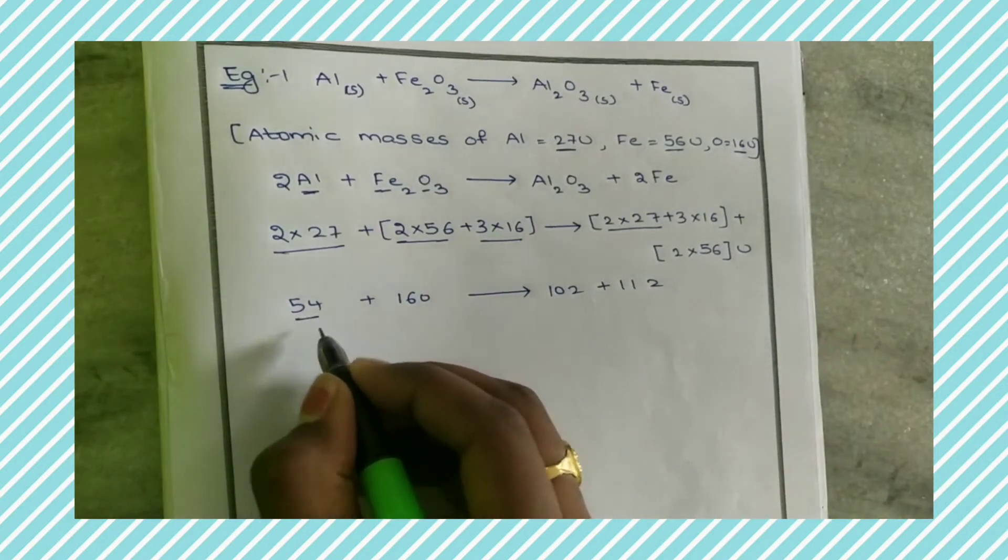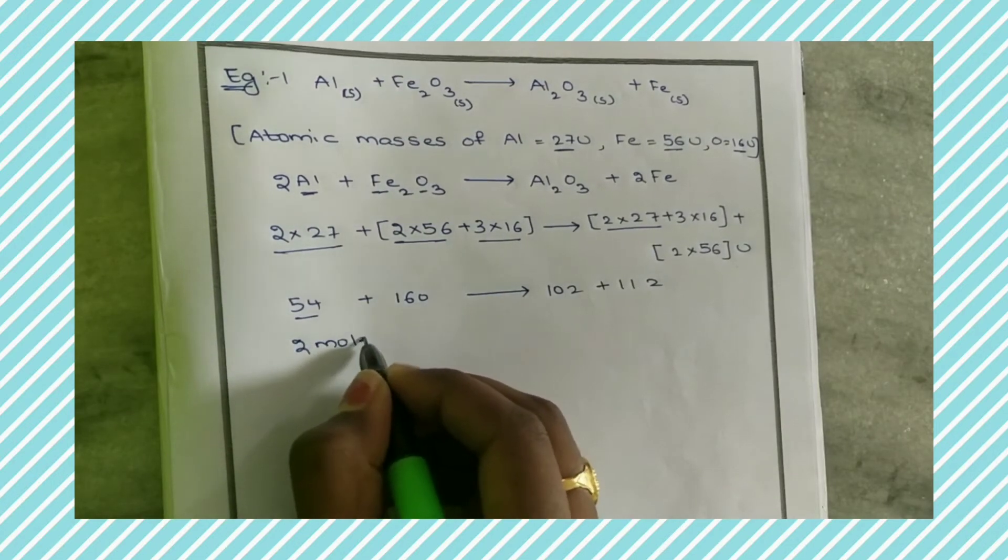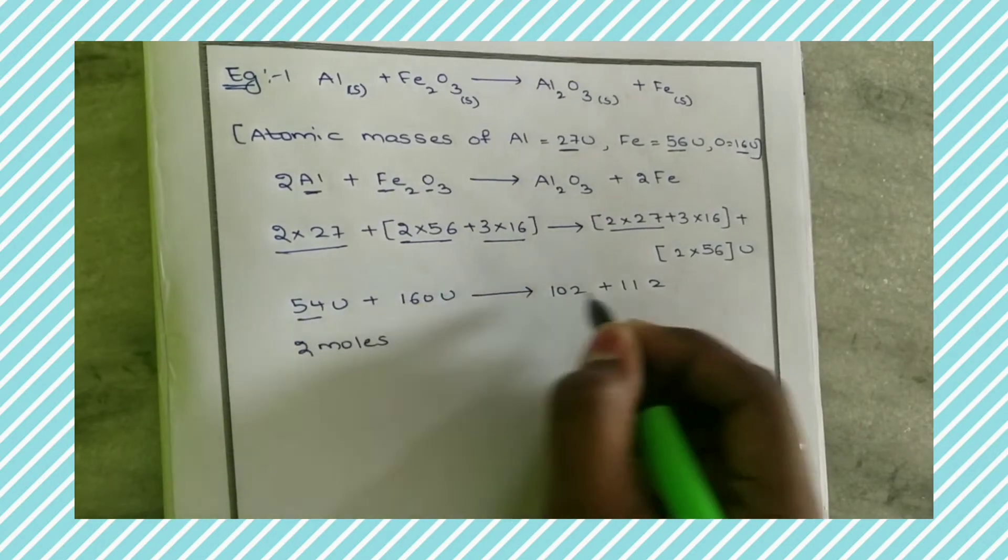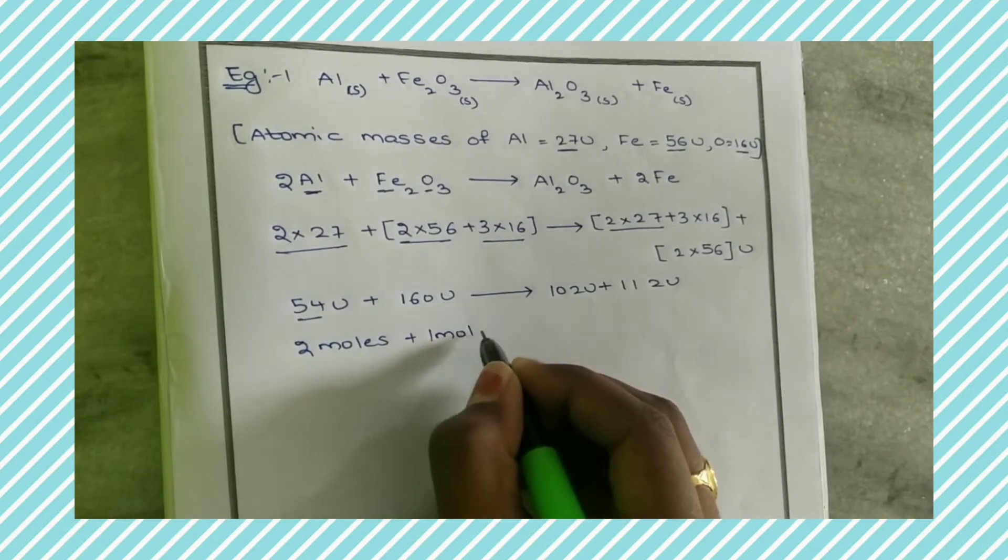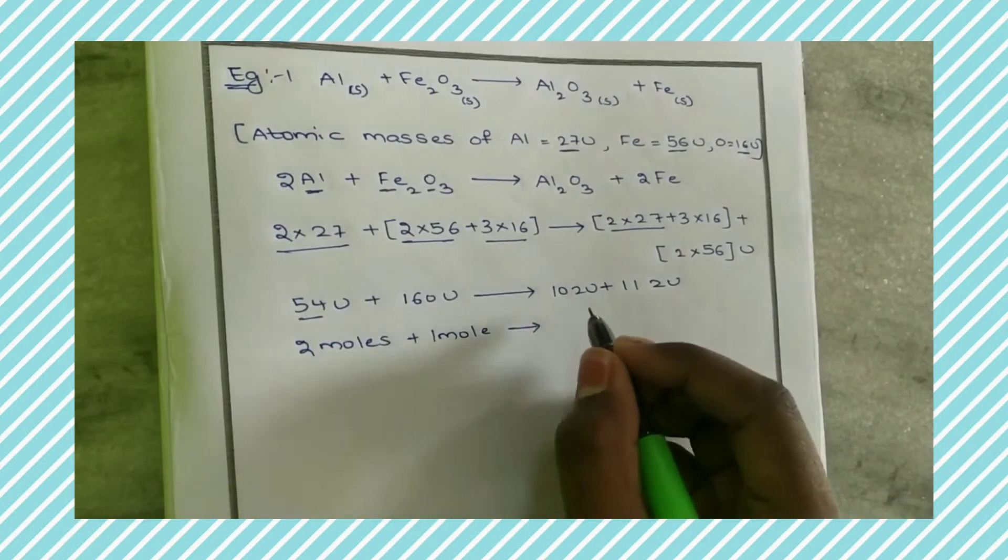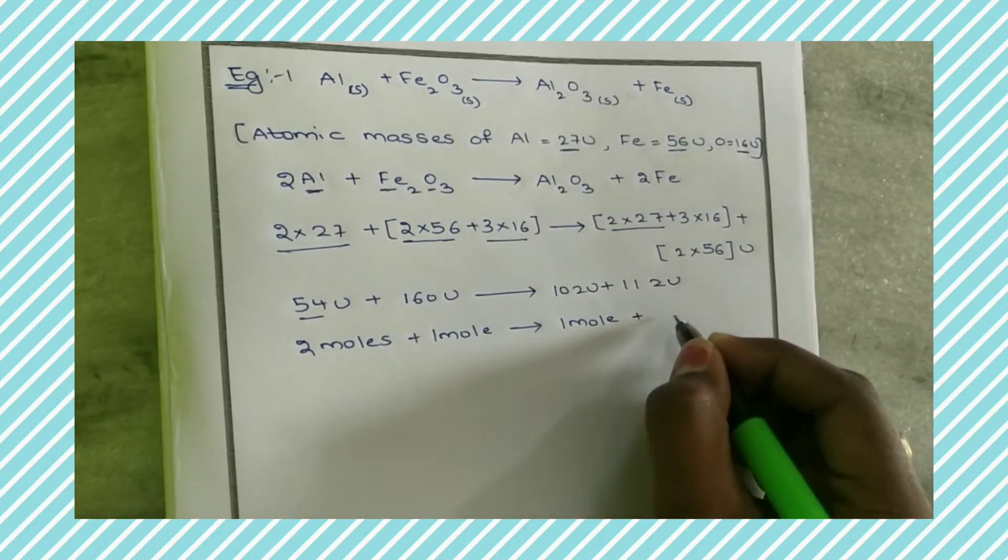54 units can also be written as 2 moles because we use 2 Aluminum, so 2 moles plus 1 mole gives rise to 1 mole plus 2 moles.